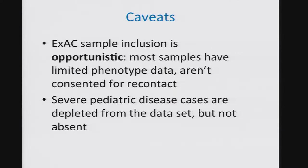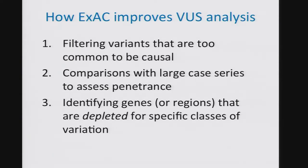There are a number of major caveats to our sample collection. First, we've been entirely opportunistic — we simply took samples from the largest exome sequencing projects we could get our hands on, where the PIs were amenable to sharing their data. That means most of the samples have extremely limited phenotype data, and almost none of them are actually consented for recontact — we think maybe a quarter to a third of the samples are consented for possible recontact. Also, although we've tried to remove severe pediatric disease cases from this dataset, some will remain. Nonetheless, those caveats aside, EXAC improves the analysis of variants of uncertain significance in a number of important ways, and I'm going to step through three of them in this talk.